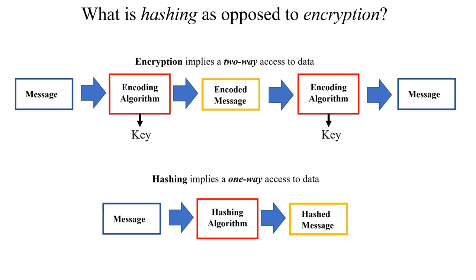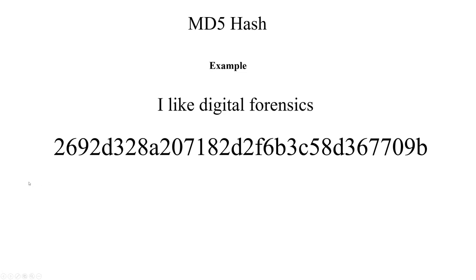What exactly is the difference between hashing and encryption? To put it simply, encryption implies a two-way access to data — there is a mathematical key which encodes the data and then decodes it. If the same key is used to encode and decode the data, it's known as symmetric encryption. If a different key is used for encoding and decoding, it's known as asymmetric encryption. Hashing, on the other hand, implies a one-way encoding of data — an algorithm takes data as input and then provides an encoded output. In this example, the MD5 hash is used to encode the phrase 'I like digital forensics,' and the algorithm produces a 32-character encoded alphanumeric string as a result.